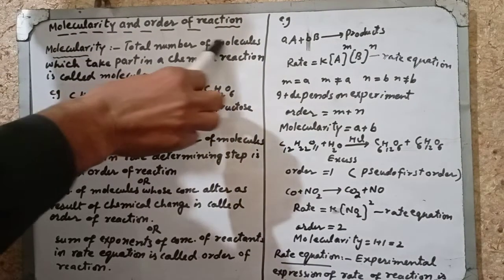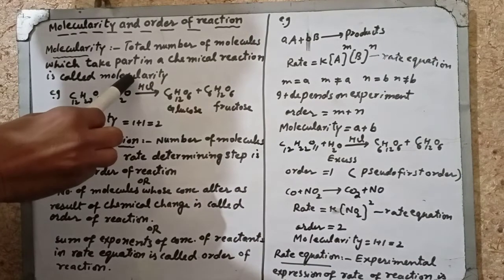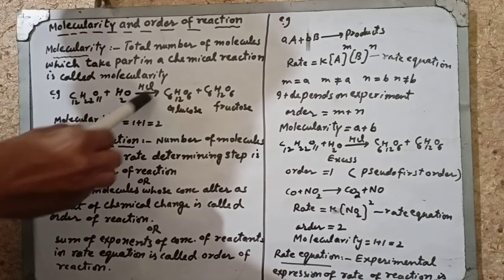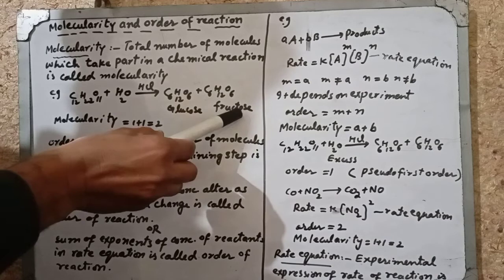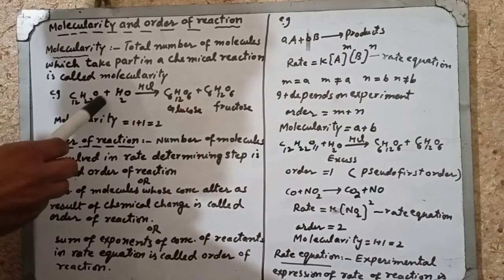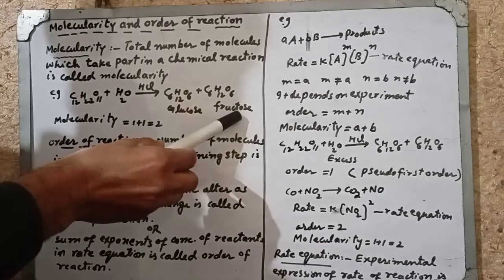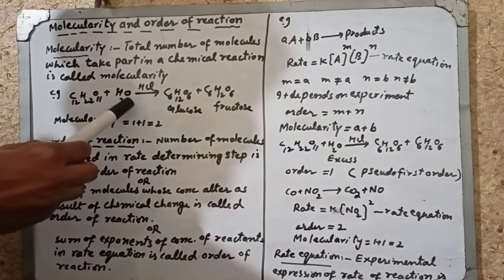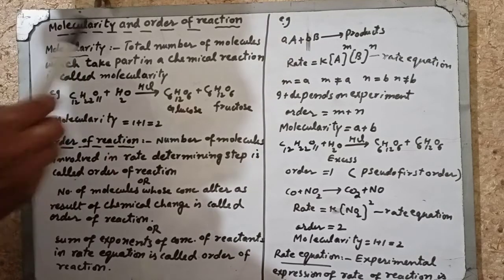Molecularity: the total number of molecules which take part in a chemical reaction is called molecularity. For example, C12H22O11 plus H2O in presence of HCl gives glucose and fructose. Sucrose is hydrolyzed in presence of acid to give glucose and fructose. Two molecules are involved — one molecule of sucrose and one molecule of water — therefore molecularity is 2. 1 plus 1 is equal to 2.